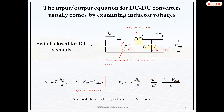For buck converter operation: once the switch is turned on the diode turns off. Applying KVL in the loop, the voltage across the inductor in on-time is Vin − Vout. The on-time is called D·T, where D is the duty cycle — the ratio of T_on to total time T. So dI_L/dt = (Vin − Vout)/L. In a buck converter Vin > Vout, so this slope is positive and the current rises linearly with time.